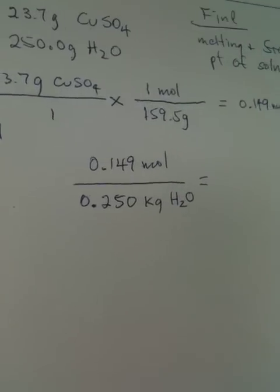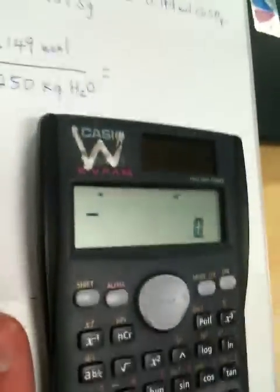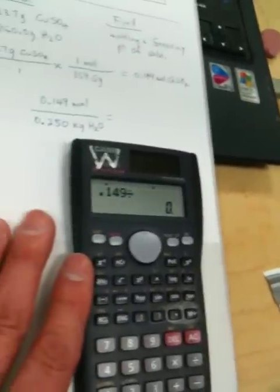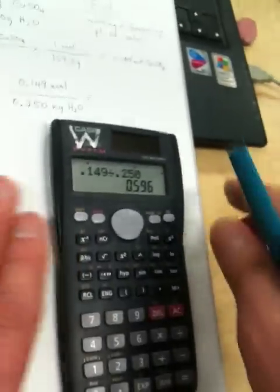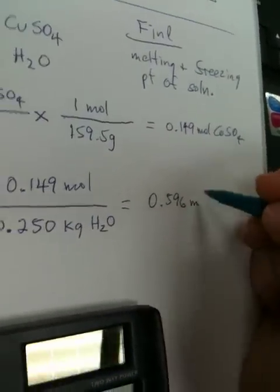And there we are. And now what we need to do is get the numbers here, 0.149 divided by 0.250. Okay? So that's 0.596 little m.